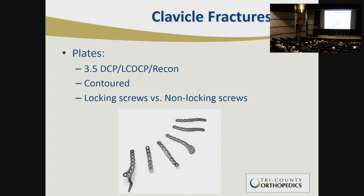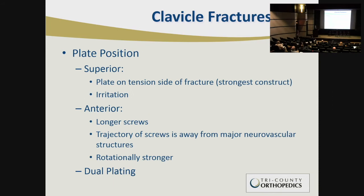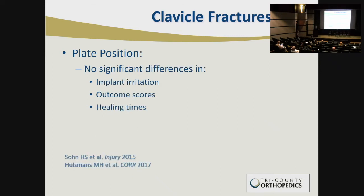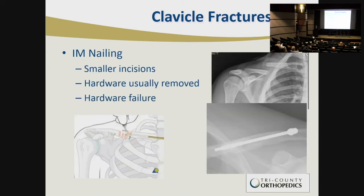Plates tend to be contoured, with locking screws for poor quality bone and non-locking screws for good quality bone. There are two main plate positions: superior positioning on the tension side gives the strongest construct, while anterior or anterior-inferior plating allows longer screws for more stable fixation, is rotationally stronger, and may have less hardware irritation. Several studies comparing anterior and superior plating found no significant differences in implant irritation, outcome scores, or healing times — so this can be a dealer's choice.